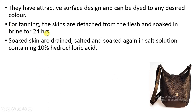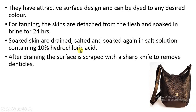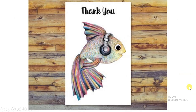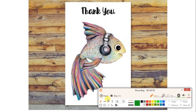The skin is first removed from the flesh and soaked in salt water (brine) for 24 hours. Then it is drained, salted, and soaked again in a salt solution containing 10 percent hydrochloric acid. After draining, the surface is scraped with a knife to remove unwanted material and denticles. The skin is then limed and tanned to prepare the leather. This concludes the byproducts produced from fish. Thank you very much.